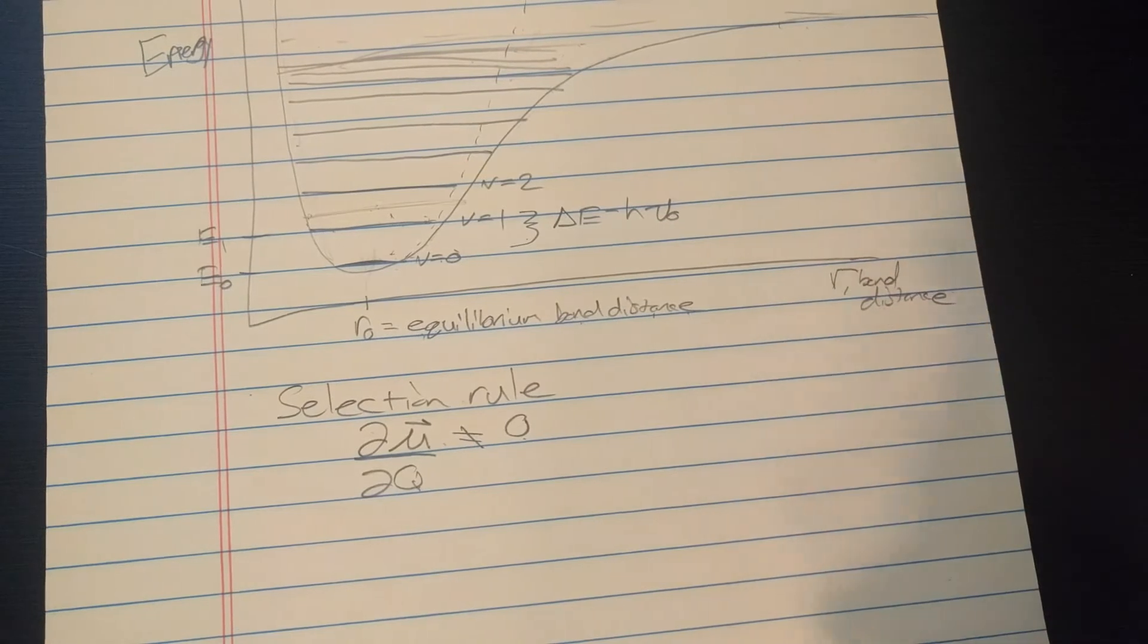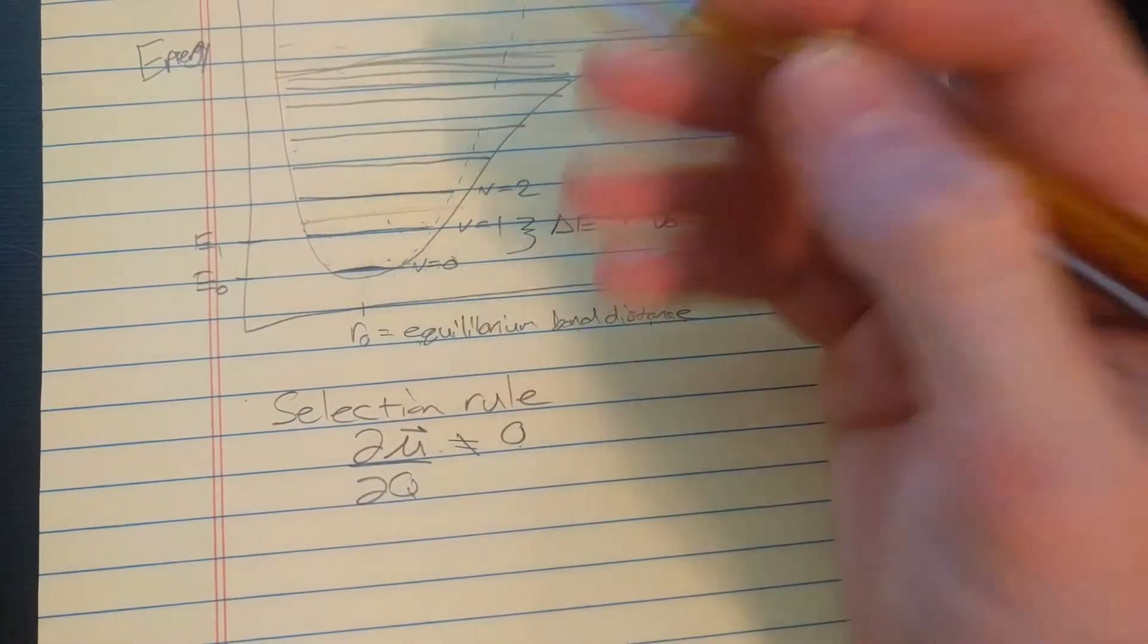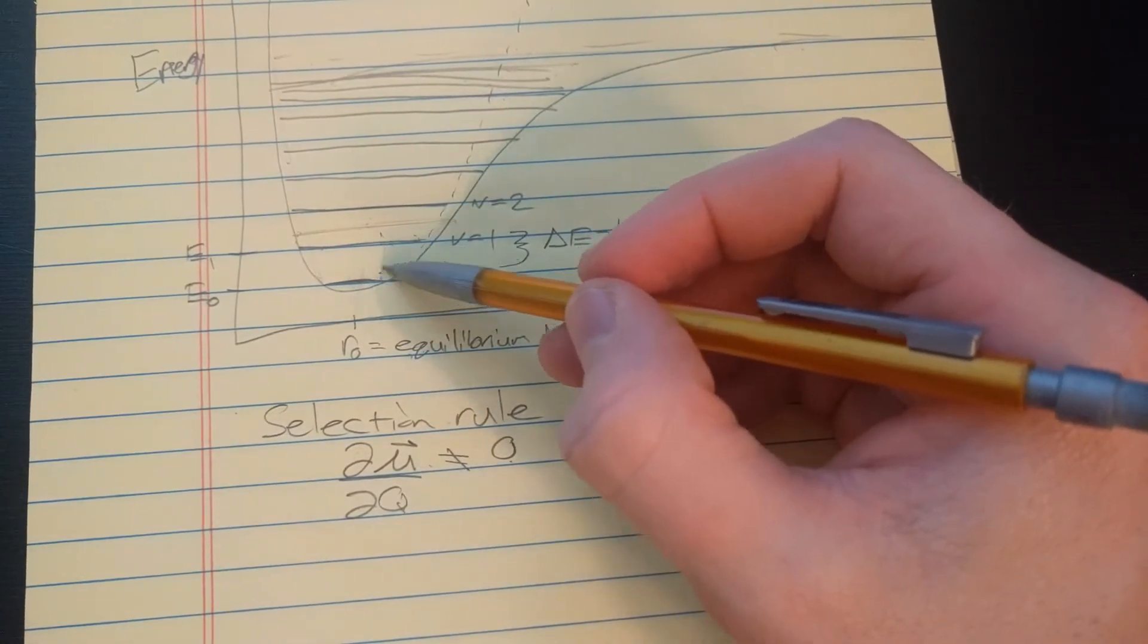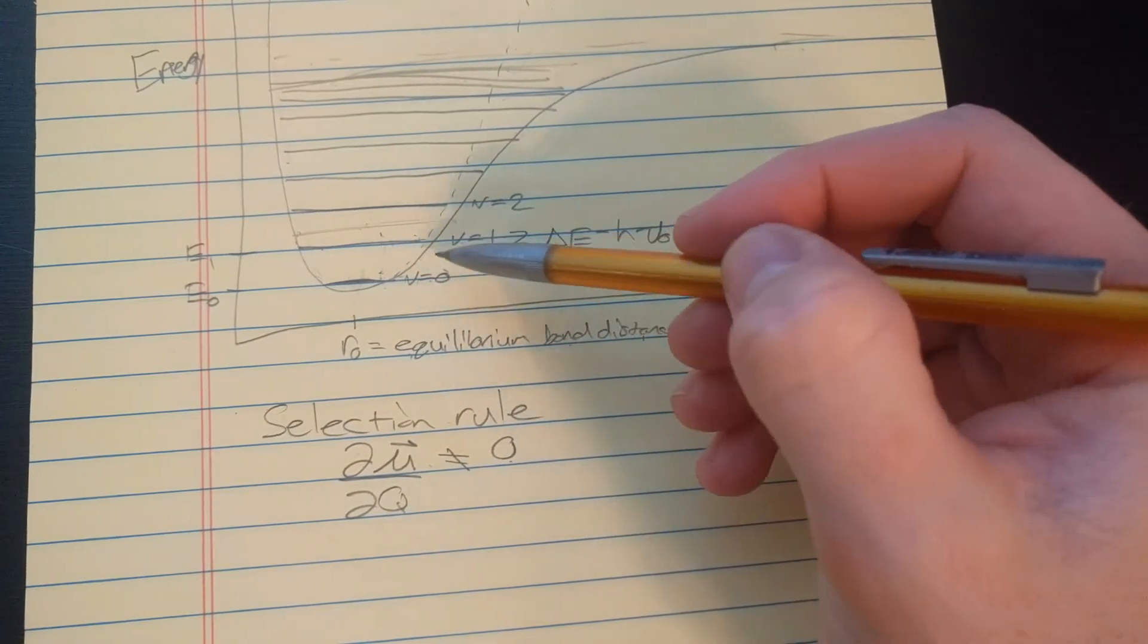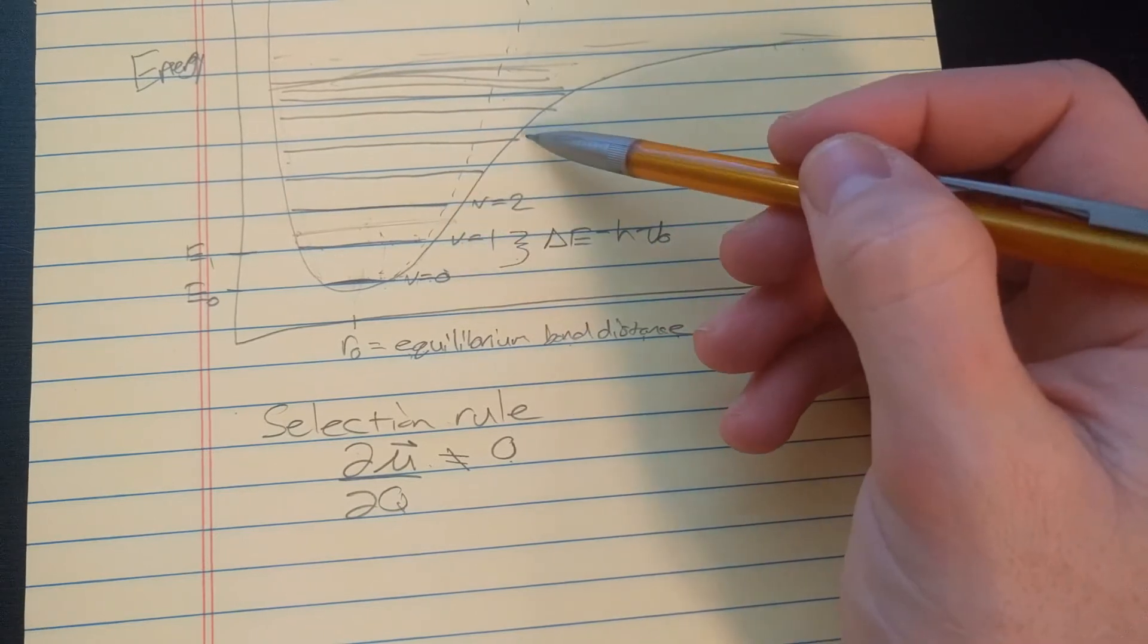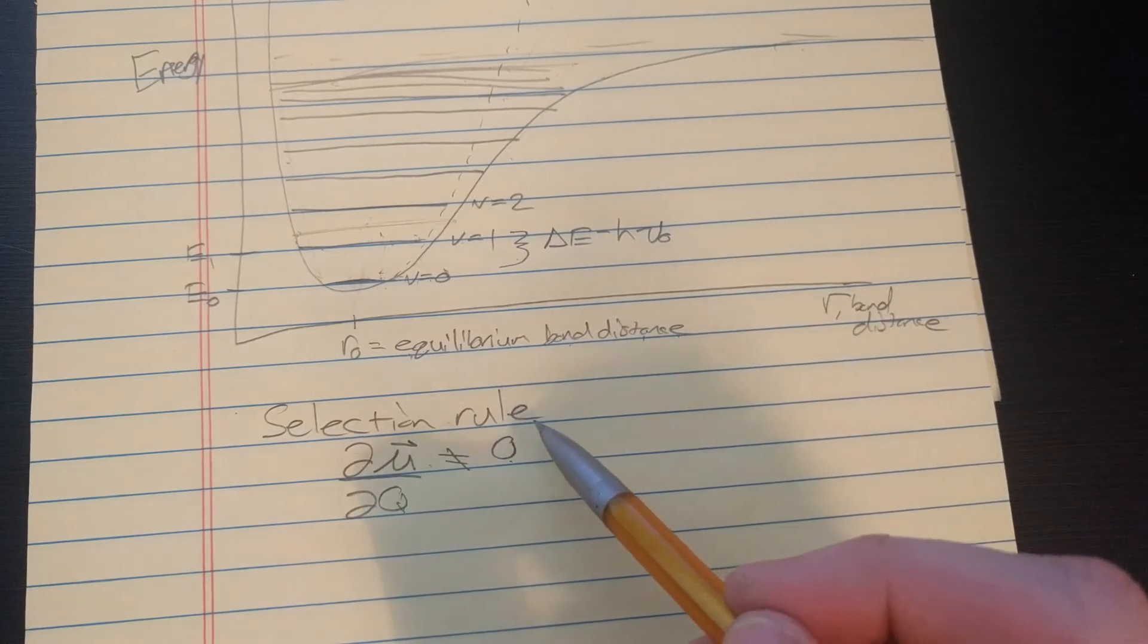And, in infrared, if you do a bunch of math, you find out you can only jump between consecutive states. So, you can only go between zero and one. You can't go between zero and two, or zero and three. So, that's the selection rule.